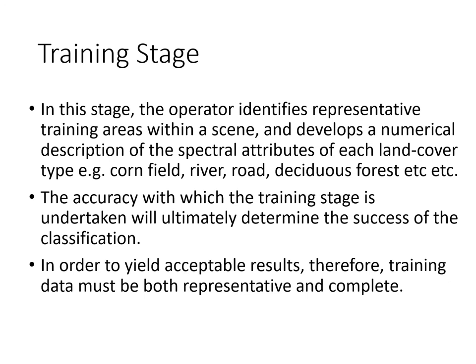In the training stage, the operator identifies representative training areas within a scene and develops a numerical description of the spectral attributes of each land cover type of interest. You need to define which ones you're interested in, and that's going to be totally dependent on your objective. Ultimately, the accuracy you're going to get is determined during this training stage — it's what determines success or failure. The mechanics of collecting training data sets also bring in the potential for human error.